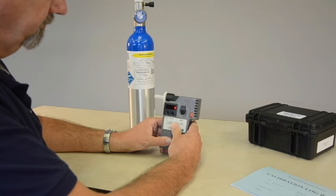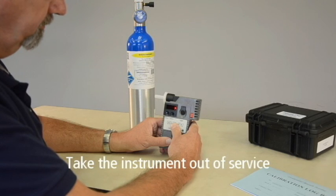It is important to note if your instrument cannot maintain accuracy within an allowable tolerance following a calibration, you must take the instrument out of service and have it evaluated and serviced by a factory trained technician.